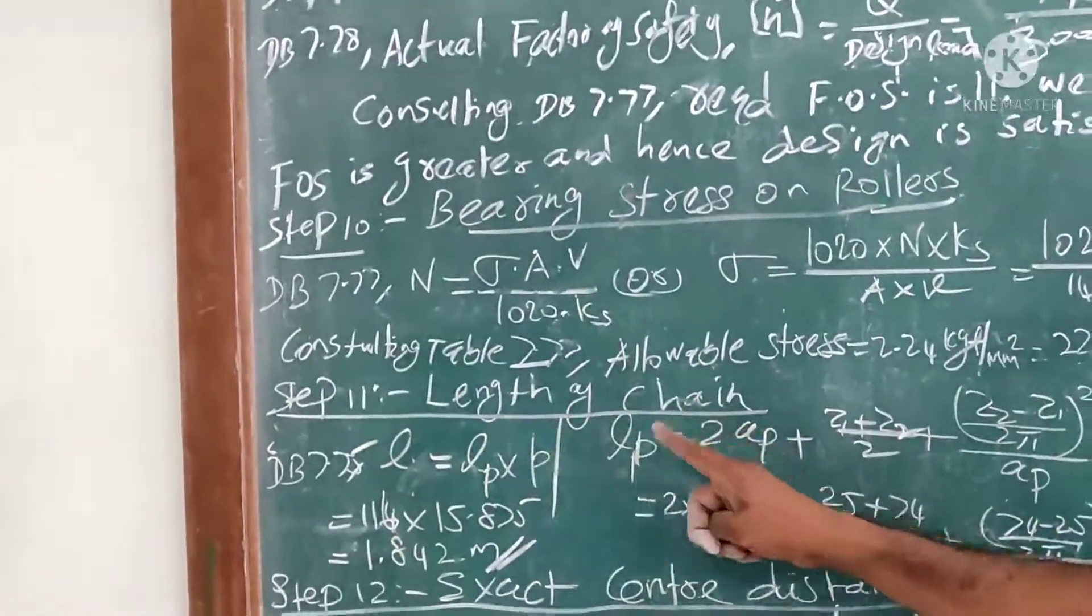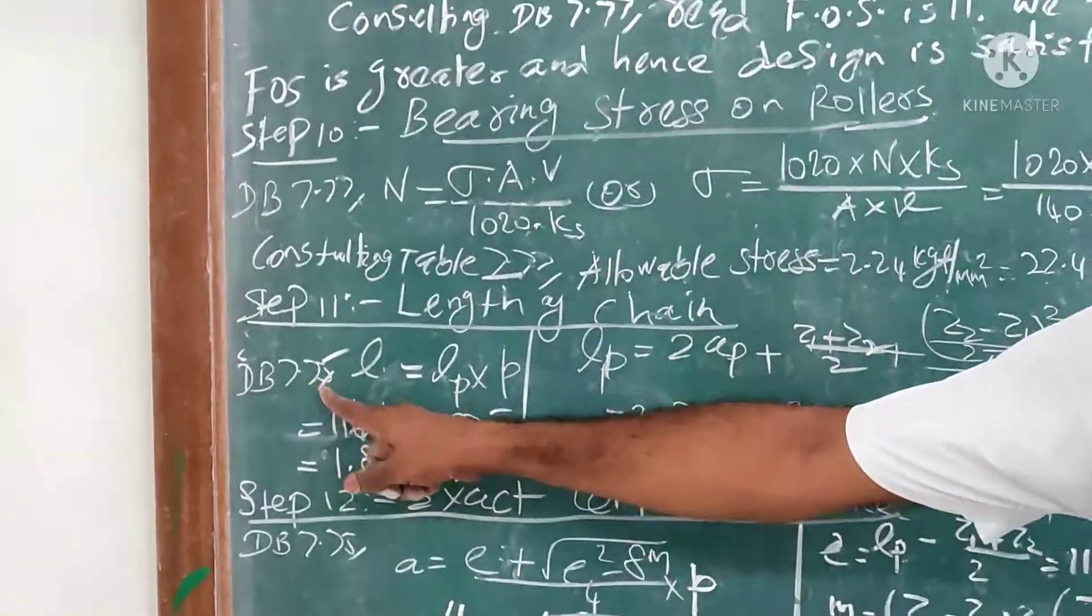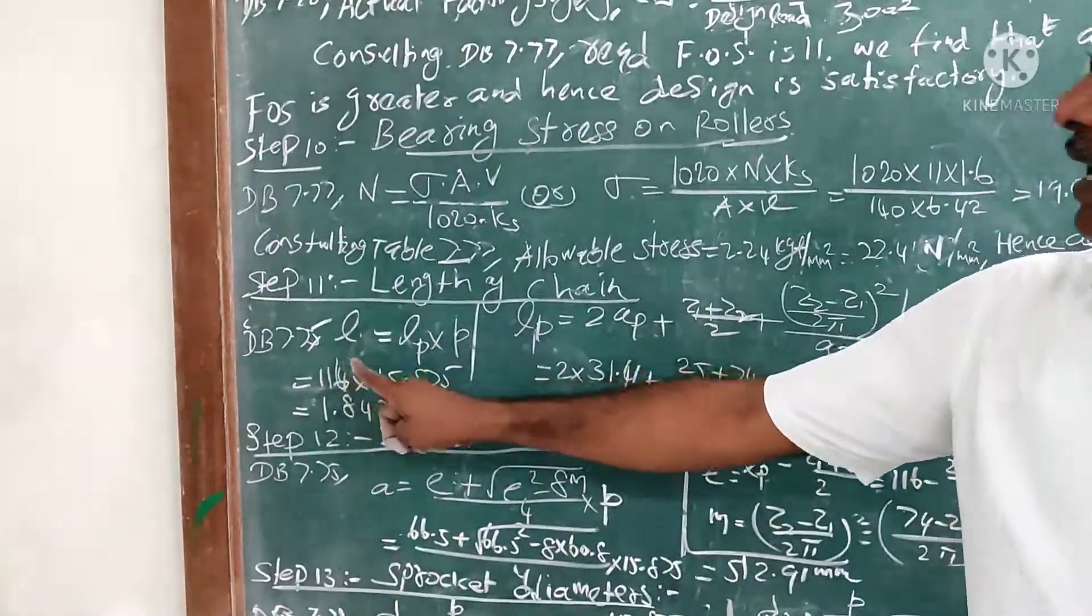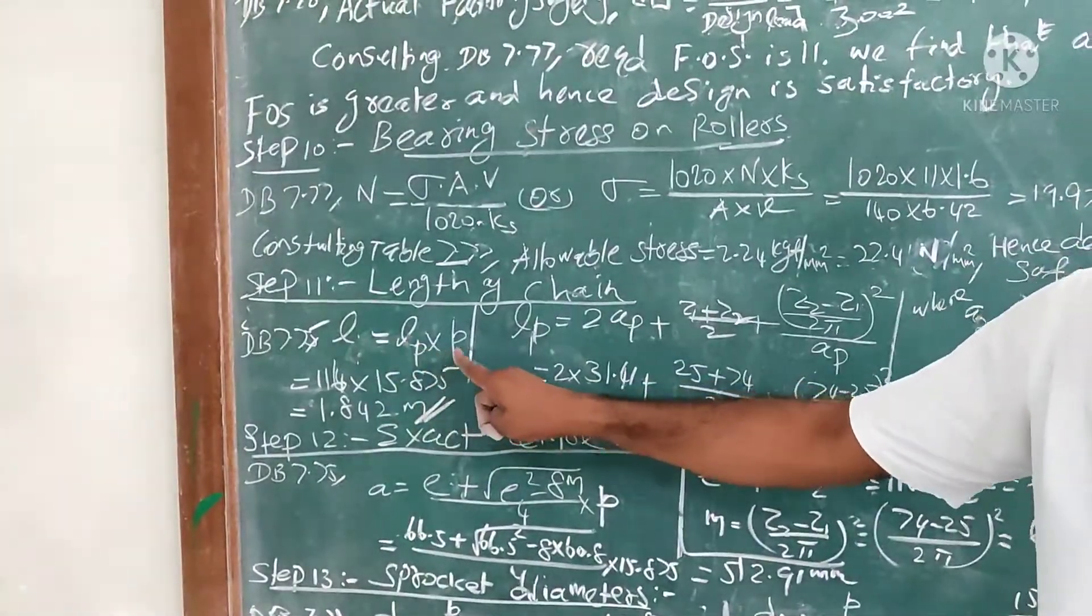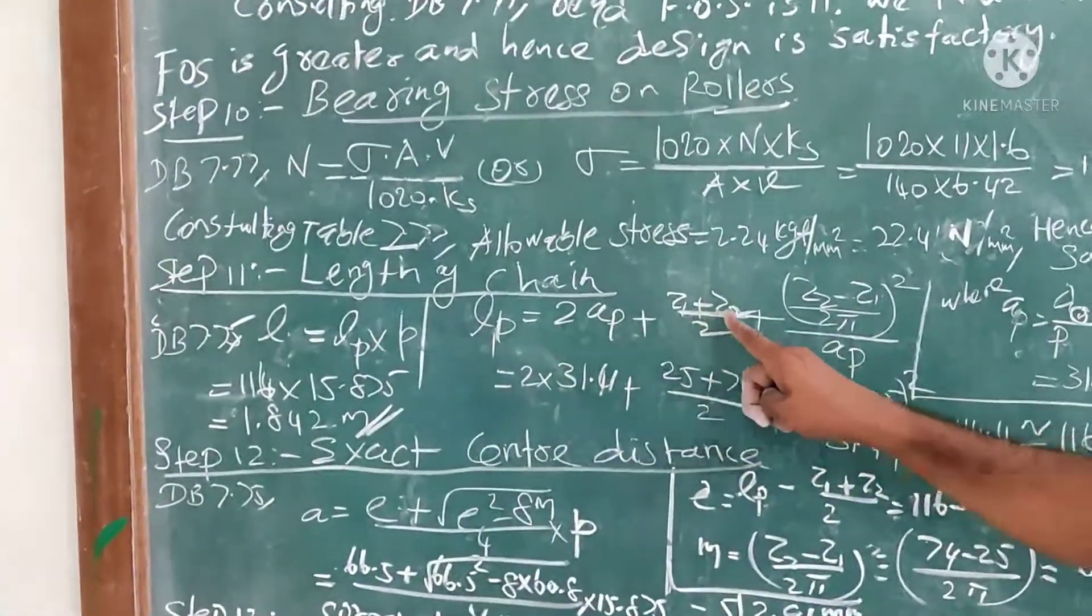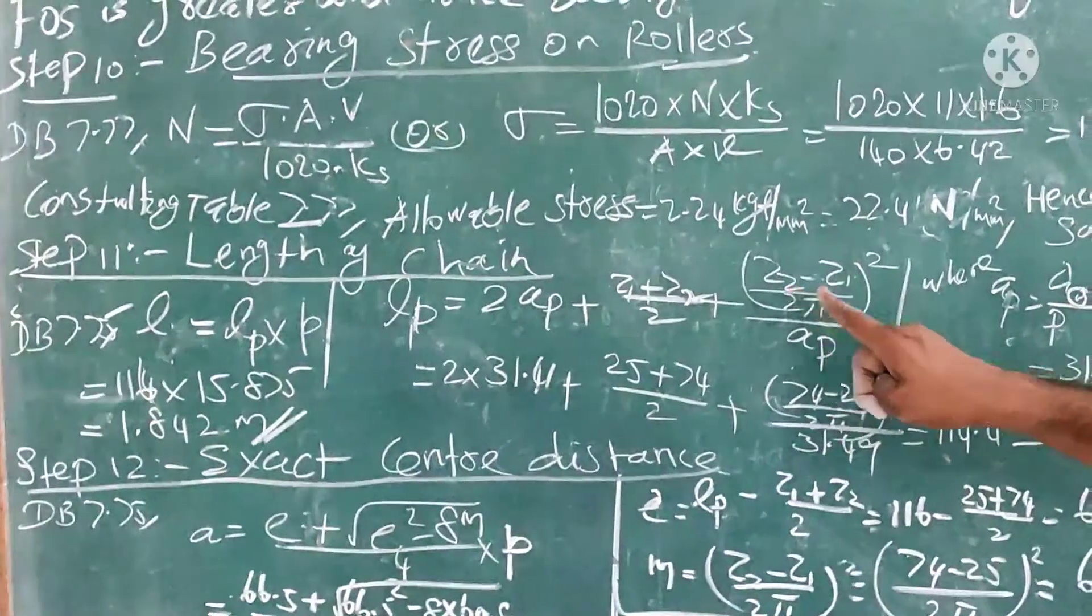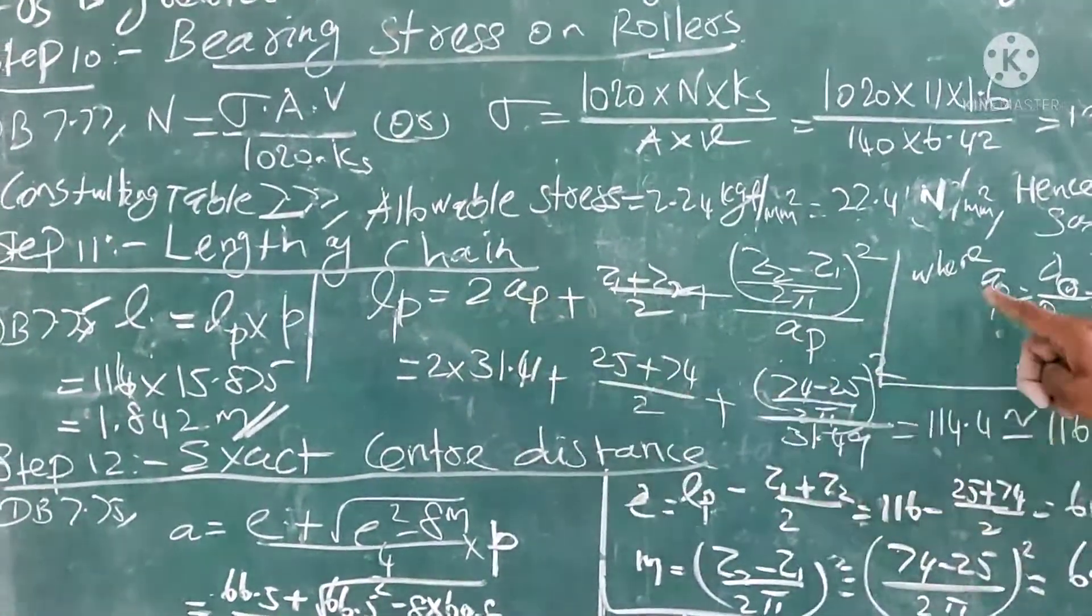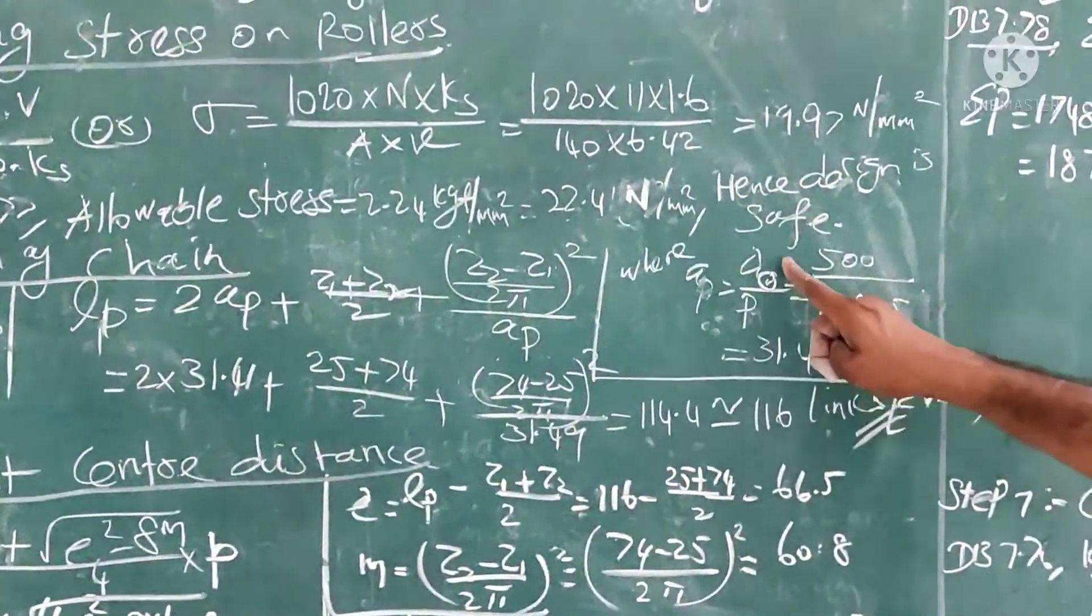Next, calculate the length of the chain by the formula in data book 7.75, L = LB × P, where LB = 2AB + (z1 + z2)/2 + [(z2 - z1)/(2π)]²/AB,